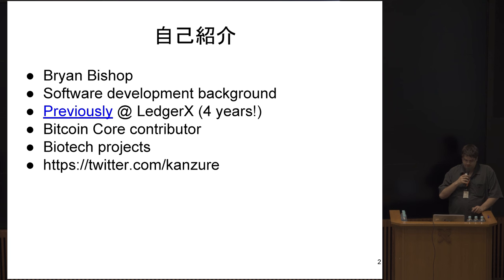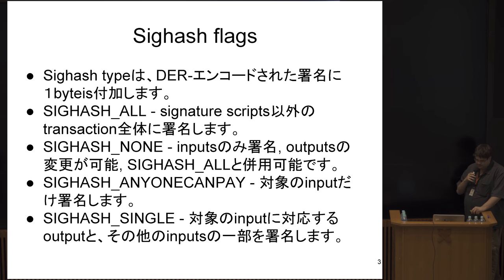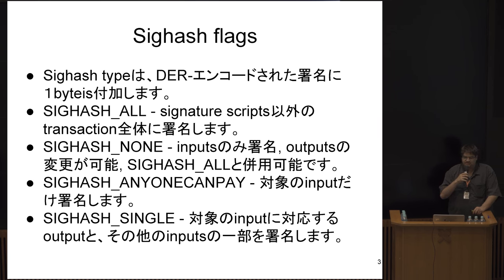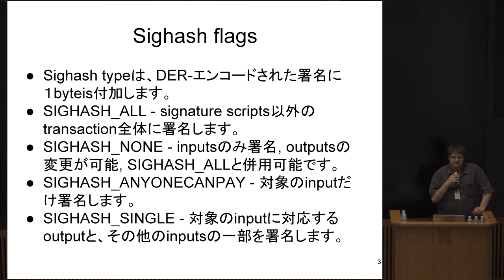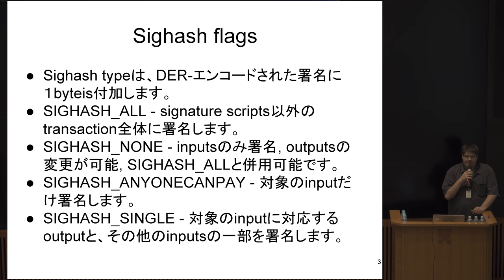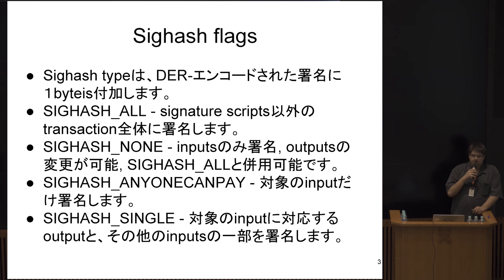I contribute to Bitcoin Core usually as a code reviewer. In order to talk about what the Sighash No Input proposal is, I'm going to talk about Sighash flags. To talk about Sighash flags, this goes back to how a transaction is structured — the data structure for a Bitcoin transaction. In the script sigs, where you have a signature for proving that you have authorization to spend a coin, these signatures are constructed in a certain way.